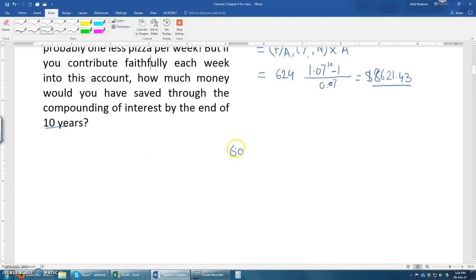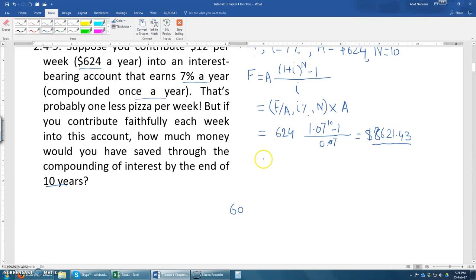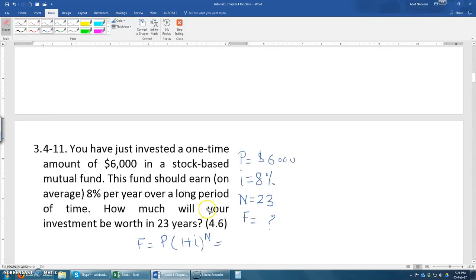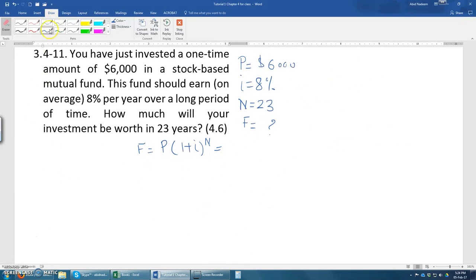Just input these values over here. So it will be 6,000 multiplied by 1 plus I, which will be 1.08, and power 23.